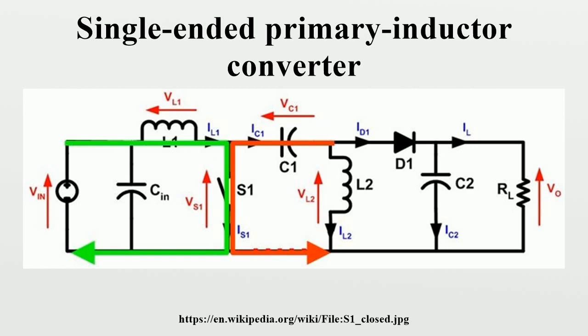The amount of energy exchanged is controlled by switch S1, which is typically a transistor such as a MOSFET. MOSFETs offer much higher input impedance and lower voltage drop than bipolar junction transistors,